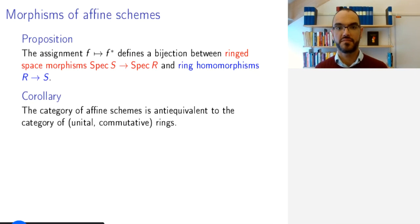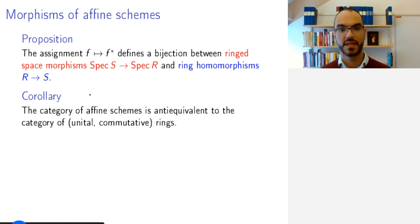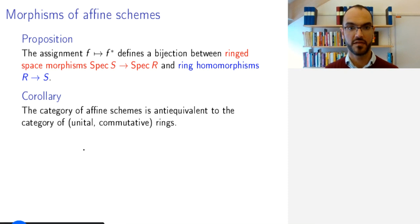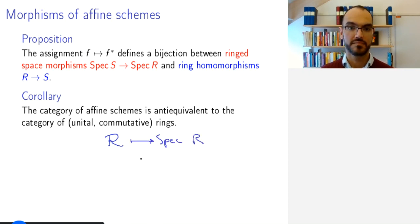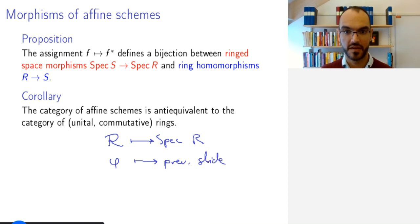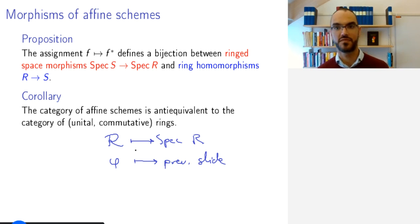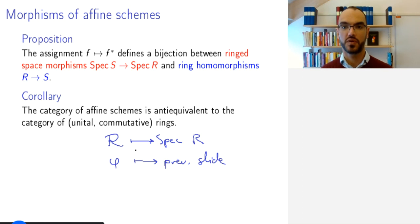This establishes the fact that ring space morphisms are in bijection with ring homomorphisms, and so the category of affine schemes is anti-equivalent to the category of unital commutative rings. The assignment sends R to Spec R and a ring homomorphism φ to the construction in the previous slide, showing that affine schemes contain exactly the information of the rings. Comparing with varieties, in that case the rings were the affine reduced k-algebras, but now we have enlarged our setting to include all unital commutative rings.